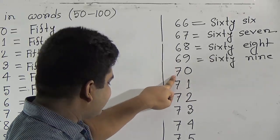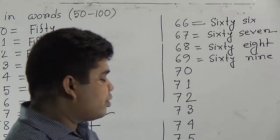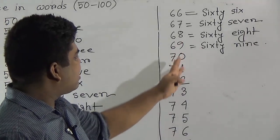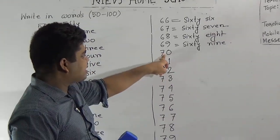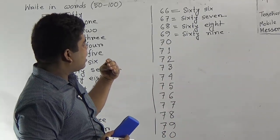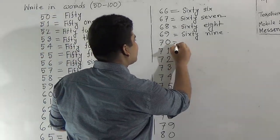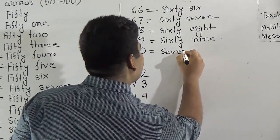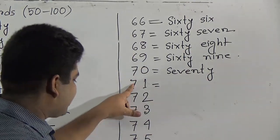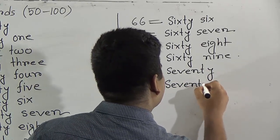Now we shall learn 70 to 79. My dear students, in this section we want to learn the spelling of 70, and then we can easily write the numbers from 70 to 79. What is the spelling of 70? We have learnt this at the start of the class. 70 means S-E-V-E-N-T-Y. This spelling of 70 is used from 71 to 79. Write 70 first: S-E-V-E-N-T-Y.